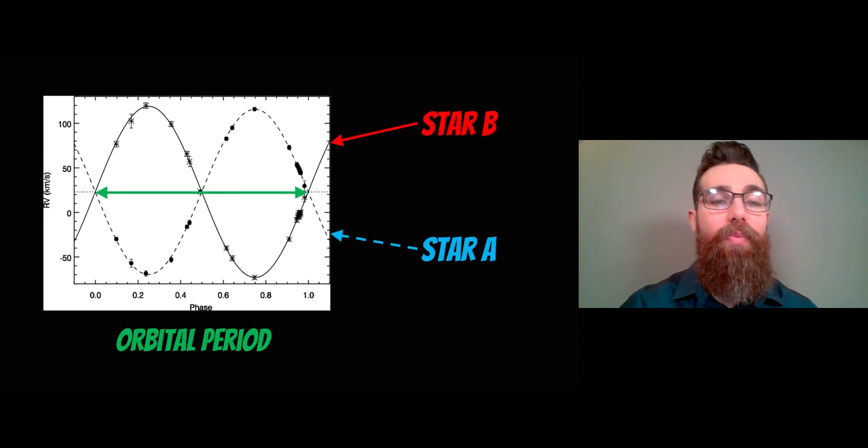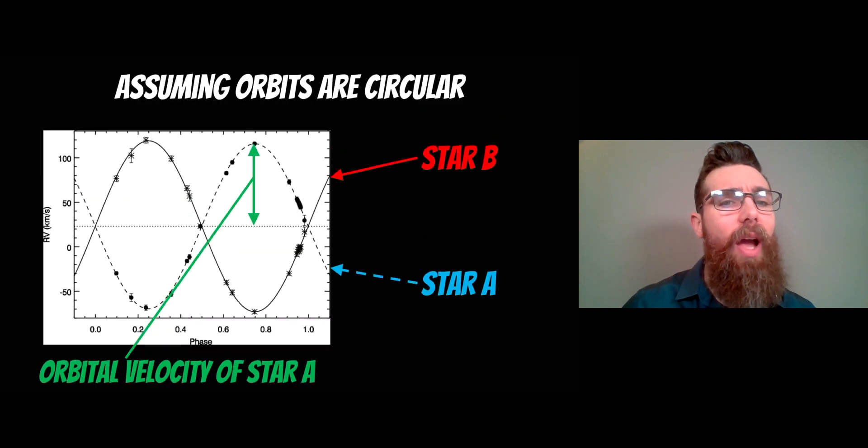As it does one cycle, that's one orbital period, so that's quite easy to do. There's your orbital period, one sine wave. If it's an elliptical orbit then they look a bit different, so we'll not go into that in this particular video. The orbital velocity, again assuming that the orbits are circular, is the peak velocity that we measure. Here is the orbital velocity for star A, so we can measure that by looking at these radial velocity plots. We can do the same thing for star B, so we get both of those orbital velocities and the orbital period.